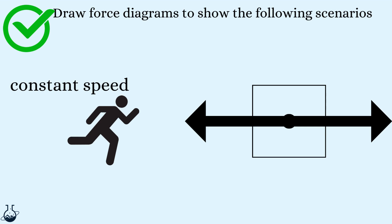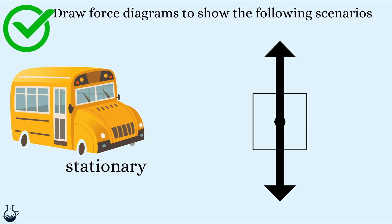This runner is running at a constant speed. So the air resistance and applied force are in balance, the same size. This bus is stationary. So no thrust or air resistance is necessary. Only its weight and reaction force is drawn and should be equal in size.